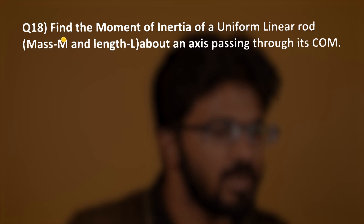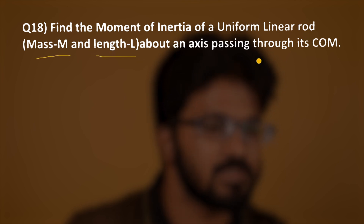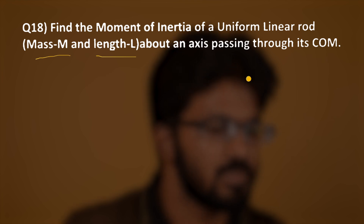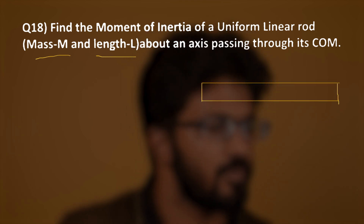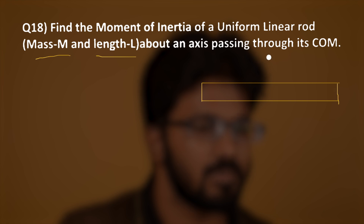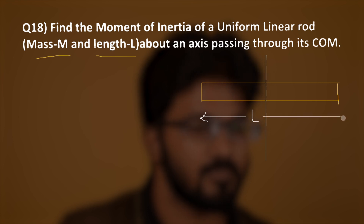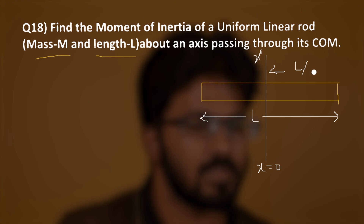In this question we have to find the moment of inertia of a uniform linear rod of mass m and length l about an axis passing through the center of mass. Let us draw the rod — the length is l — and we find this from x equal to 0, with half the length of the rod taken as l by 2.